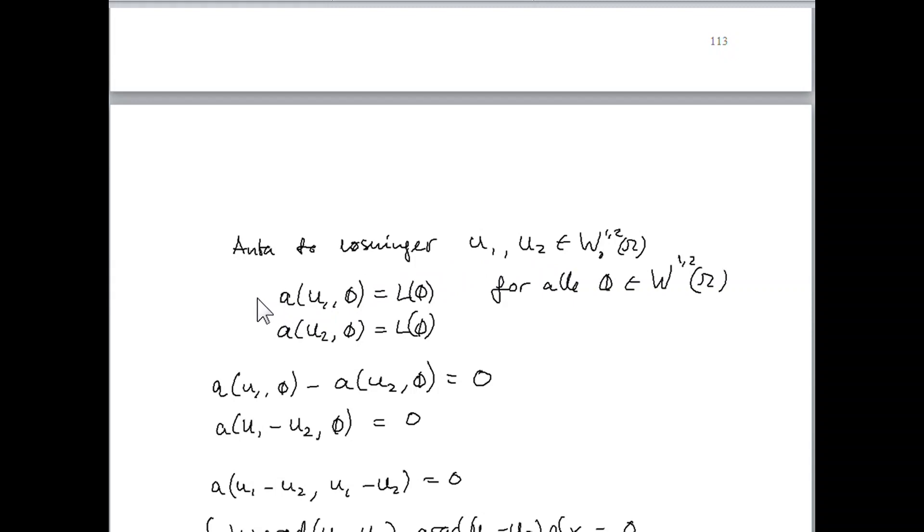And what is a solution? Well, yes, it satisfies the following equation for all phi in W_0^{1,2}. Actually, in W_0, so here we should have some 0 also on this space. So these two equations are satisfied. Because this is a solution and this is a solution. So why don't we just subtract these two equations?